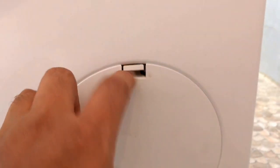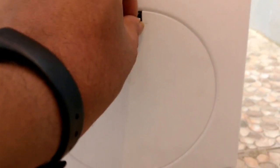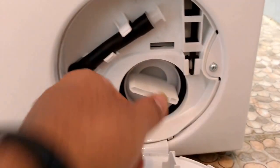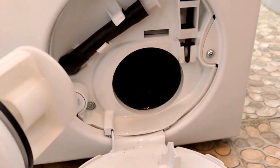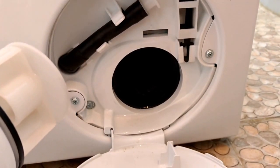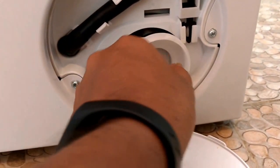An important information that I need to share is about this front slot which most of the front load washing machine would have. So this slot when you open you would see any coins or pens that comes out of your wash through your pockets, those are all stored in this slot.